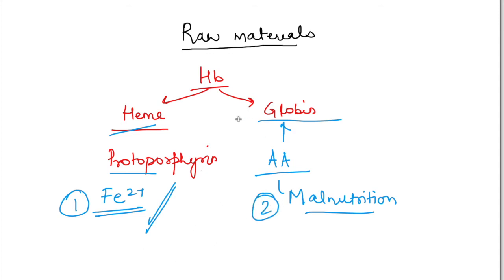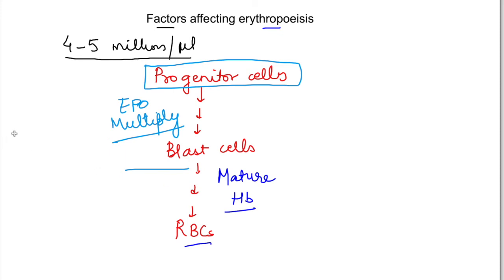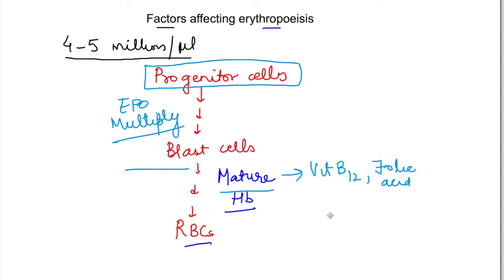So that is another raw material. Now the third raw material is for maturation. For maturation, we basically need to mature the nucleus, which is done through DNA synthesis. For DNA synthesis, we need Vitamin B12 and folic acid, which are very important. If these components are not present, the cells will get bigger in cytoplasm but DNA will not mature and the cell will not divide. So when Vitamin B12 is reduced, we will get large blast cells that will not mature and not divide.